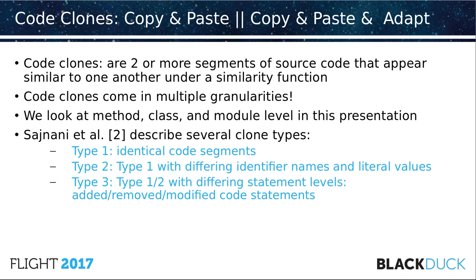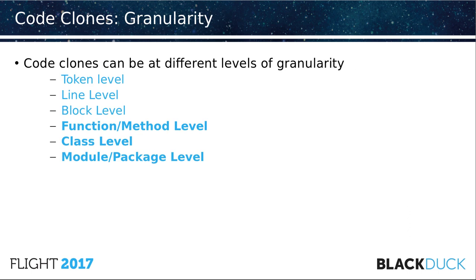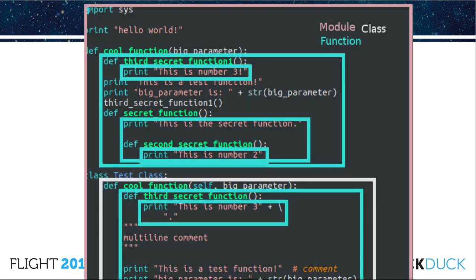Jani et al. described several code clone types, ranging from type 1 that's identical to type 3 which is adapted. If we look at code clone granularity, we could be at the token level, the line level, the block level, or groups of lines, but we're going to focus on semantic levels like functions and methods, classes, modules, and packages.